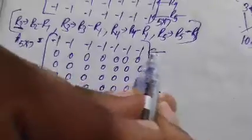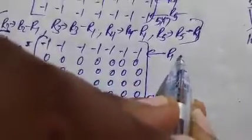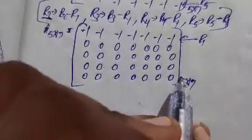This 5×7 matrix now has only one non-zero row, which is R1. Rows 2 through 5 are all zero. Since there is only one non-zero row, the rank of this matrix is equal to 1.